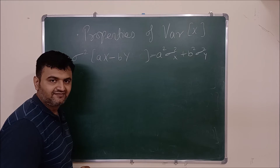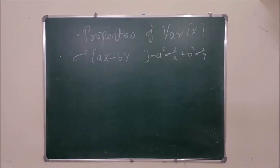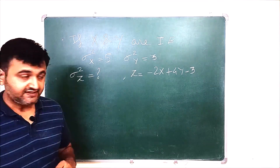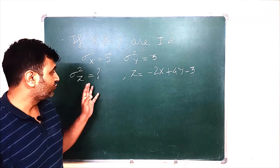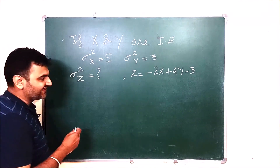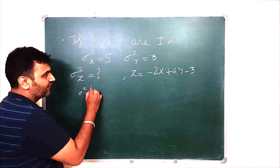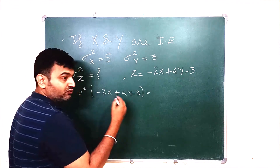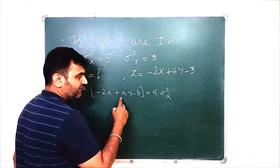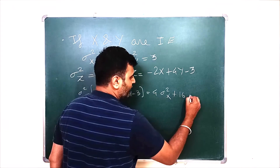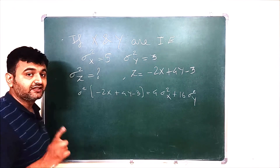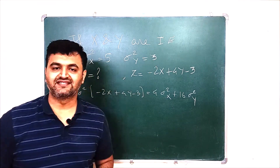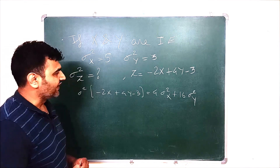Let's see an example. Here x and y are independent, Var(x) and Var(y) are given. We want to find Var(z) = Var(−2x + 4y − 3). Since they're independent, there's no covariance term. So it is (−2)²·Var(x) + 4²·Var(y) = 4·Var(x) + 16·Var(y). Plugging in the given values of 5 and 3 respectively gives the answer.